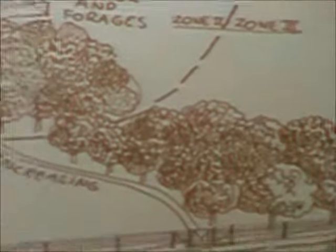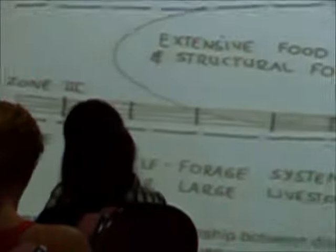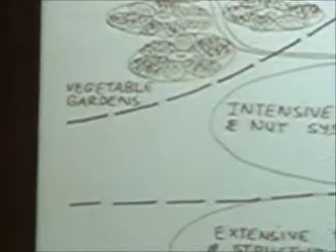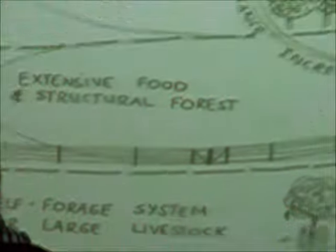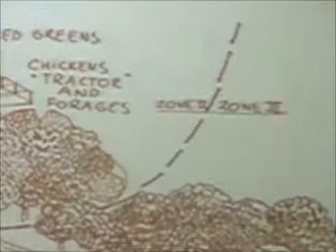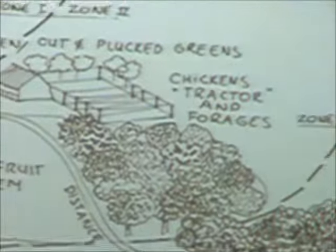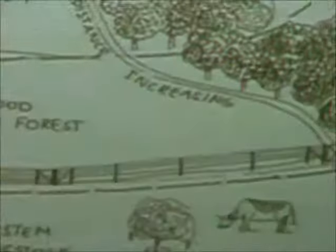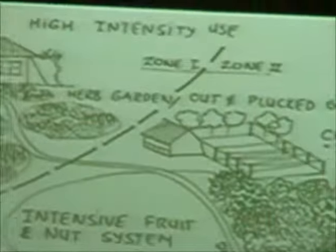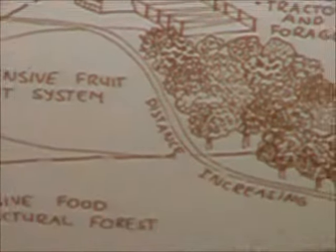Zone 3 is the main cropping zone, where you would have large fruit and nut trees as well as intercropping systems with rotation, and where on farms with animals you would have pastures. Zone 4 is a foraging and wood harvesting area, which can be used to collect wild food.